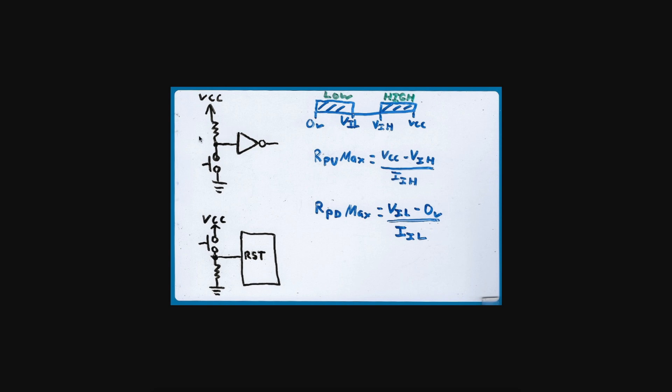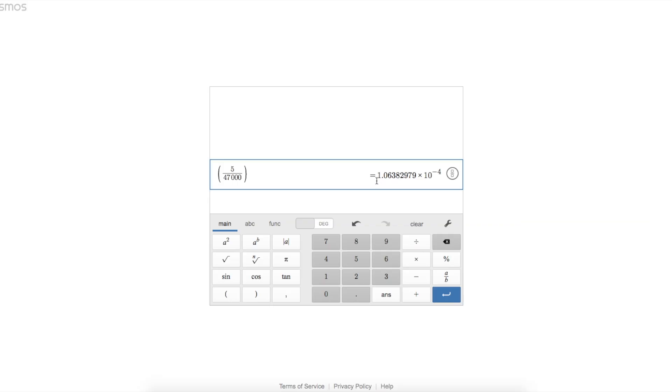So that should be well within the power handling capability of many resistor packages. And if it's a battery powered circuit, 0.1 milliamps, 100 microamps for a momentary push button, let's say, could be considered low current.